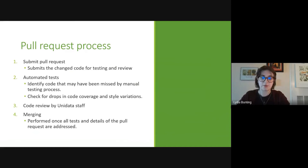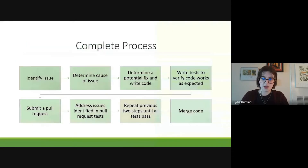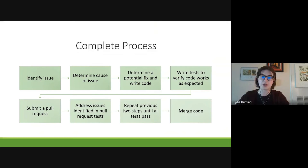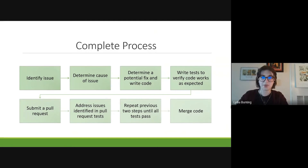Once these automated tests are done, the code undergoes further manual review by staff, and then once it meets all the necessary standards and is behaving appropriately, it is merged with the rest of MetPy. This flowchart shows an overview of that process: identifying an issue with MetPy functionality, then a developer determines the cause, determines a potential fix, and writes code to address it. They then write tests to verify their code is working as expected, then submit a pull request so that automated tests can be run. If there are issues with the pull request, they go back and address them, and this cycle repeats until all the tests pass and the code can be merged.